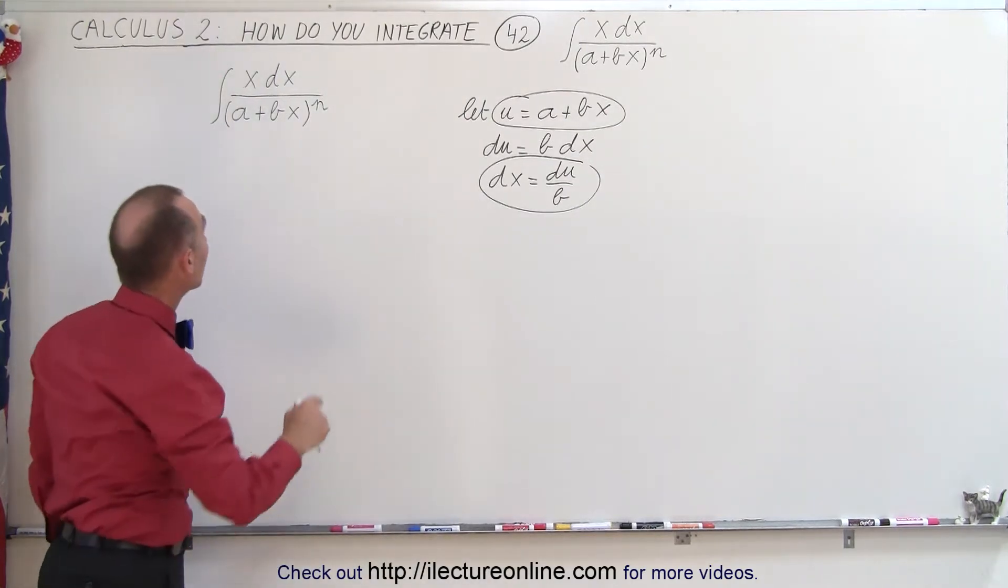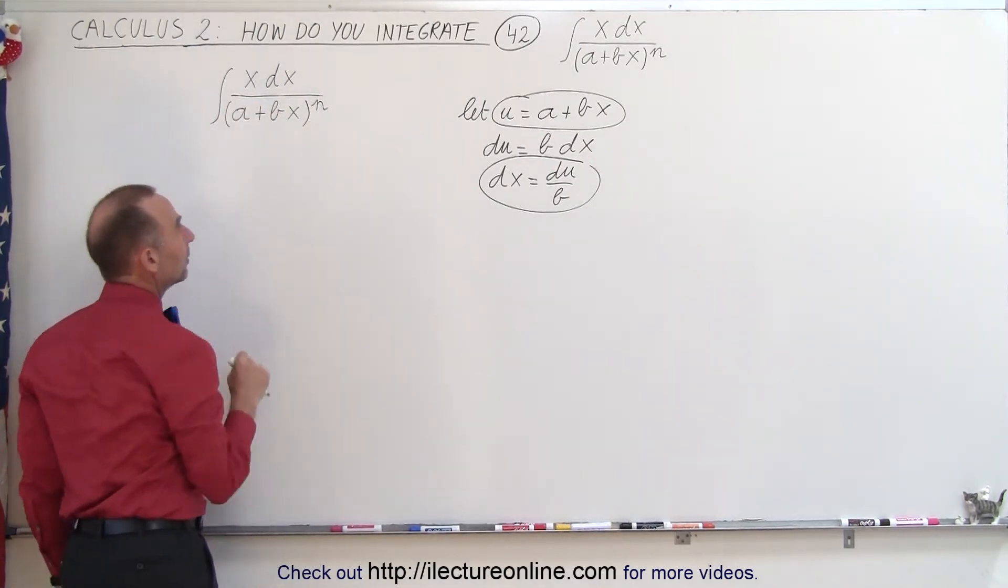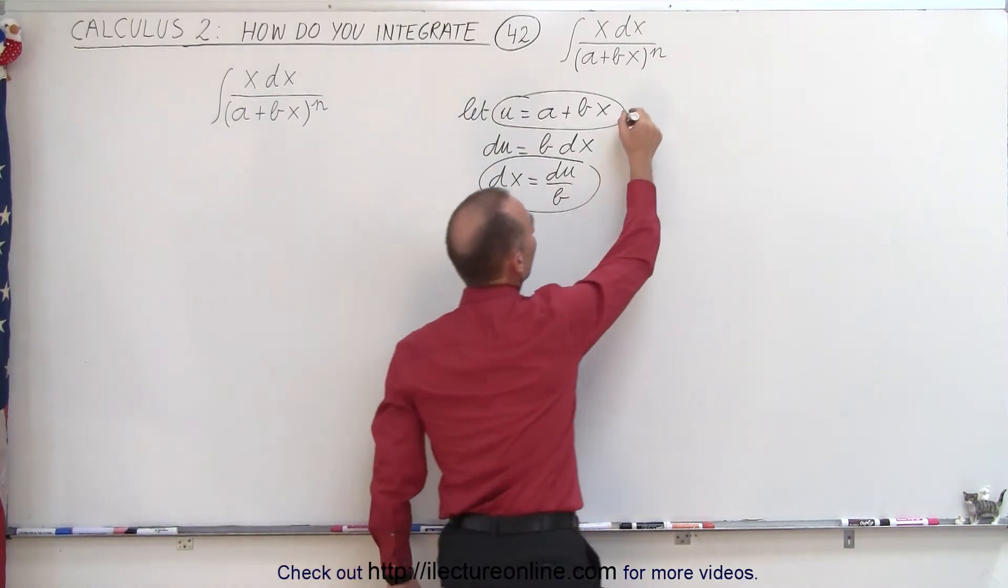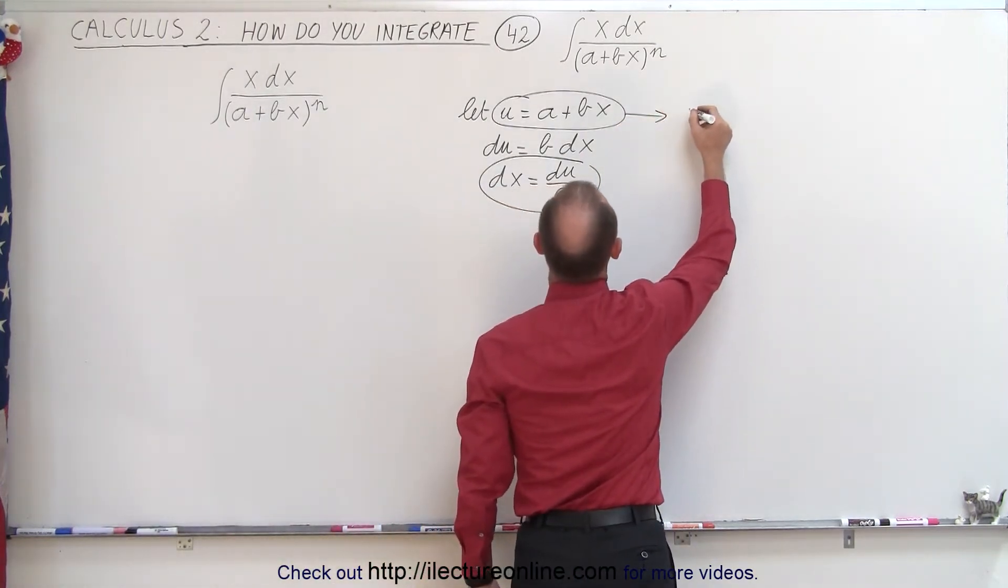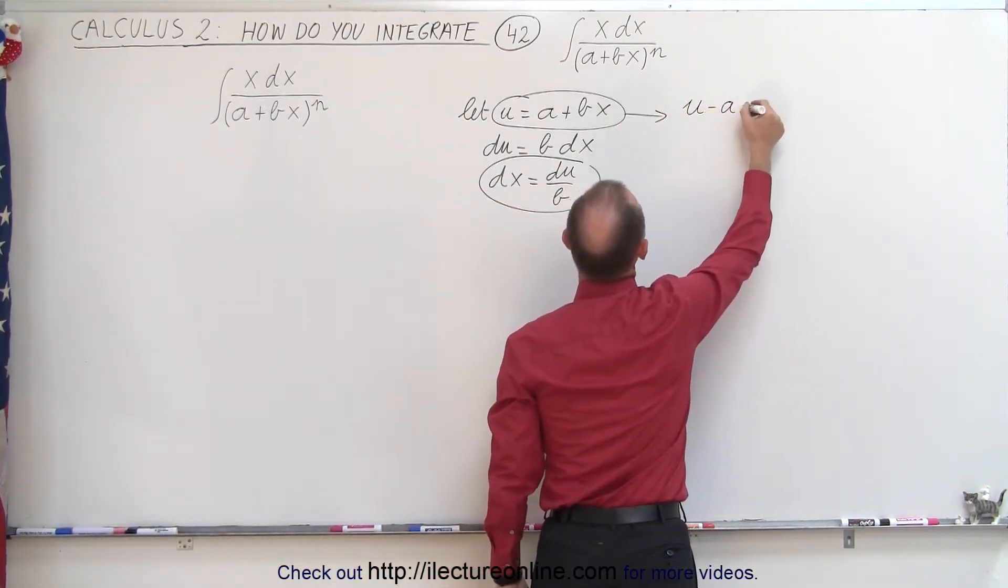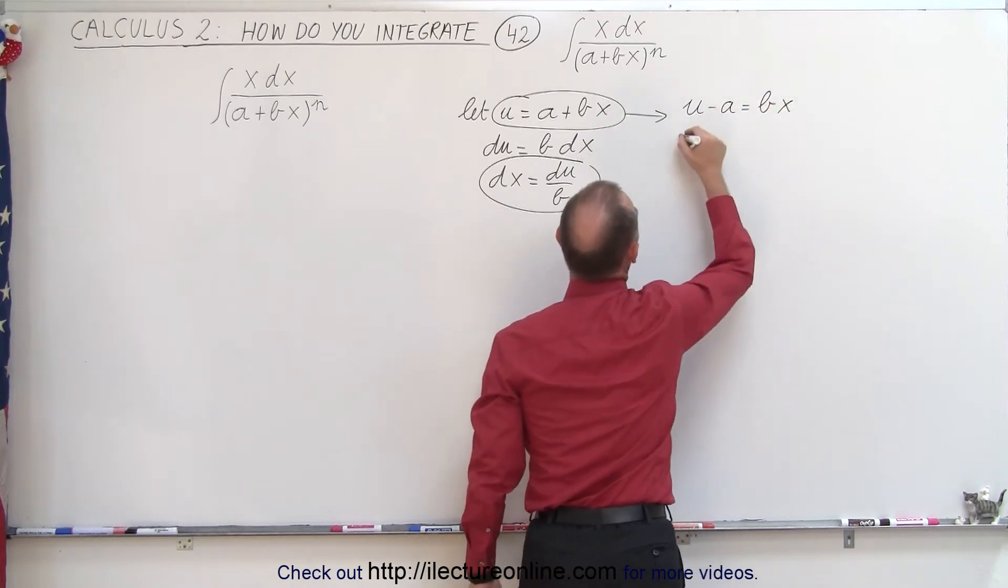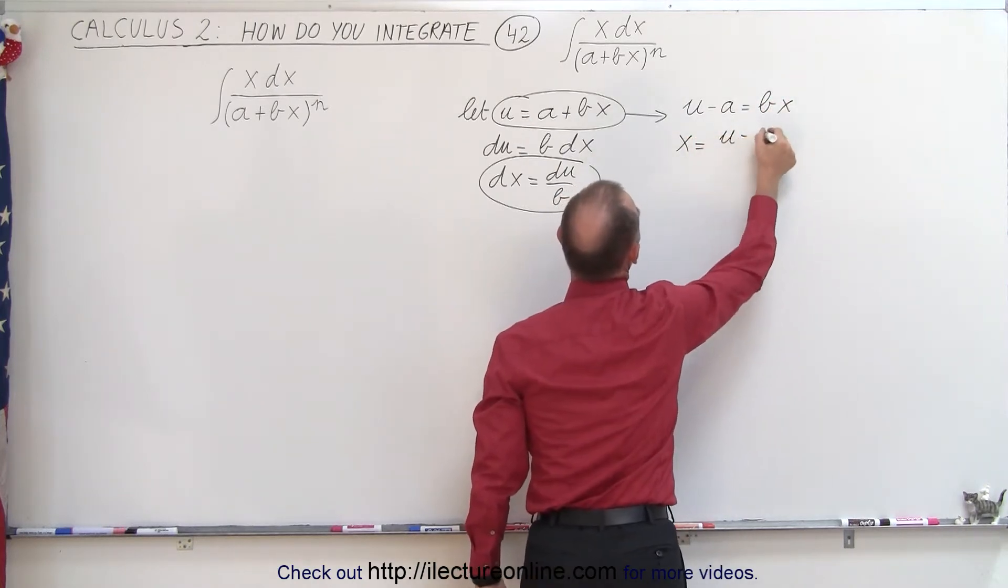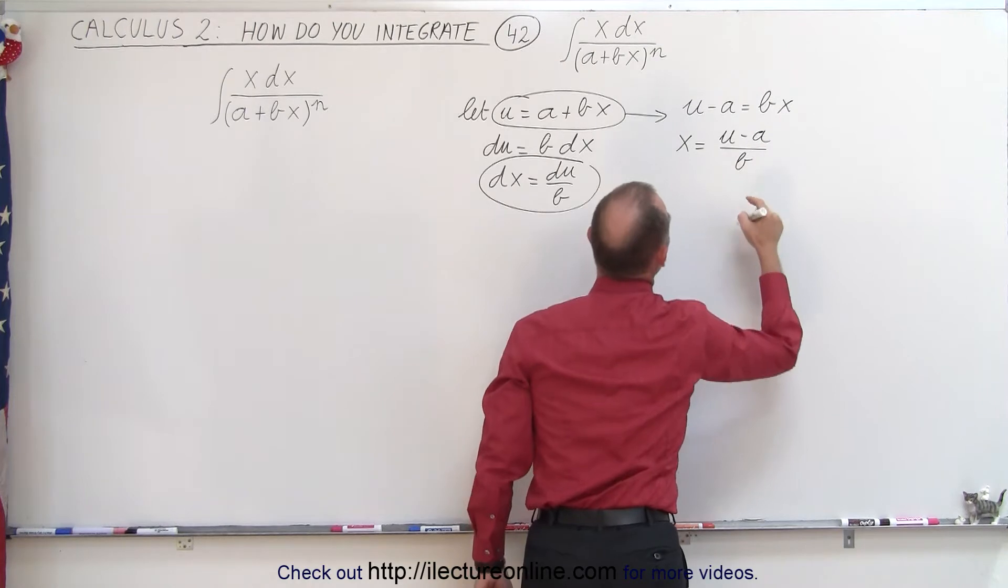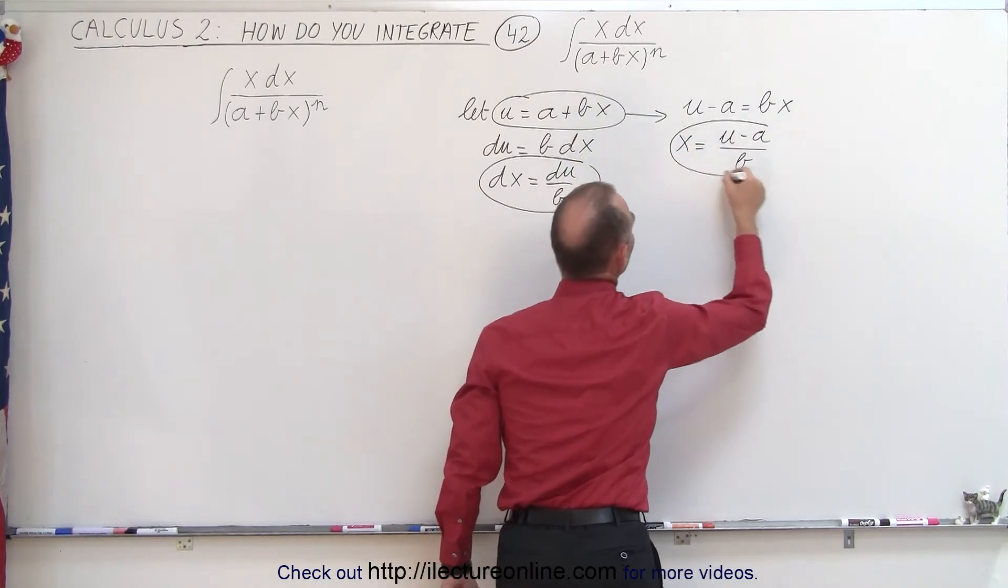But when we do that, we'll notice we still have an x in the numerator, which means we also have to make the substitution where we have u minus a equals bx, or x is equal to u minus a divided by b, and substitute that also inside our integral.